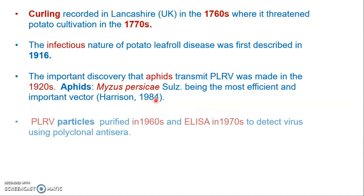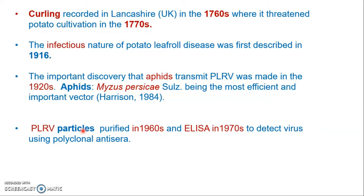Potato Leaf Roll Virus particles were first purified in 1960. The virus was then detected from diseased potato crops using a serological assay — ELISA (enzyme-linked immunosorbent assay) — in 1970. Special antibodies and antisera were made for PLRV, and using these serological techniques, PLRV was first detected in 1970.